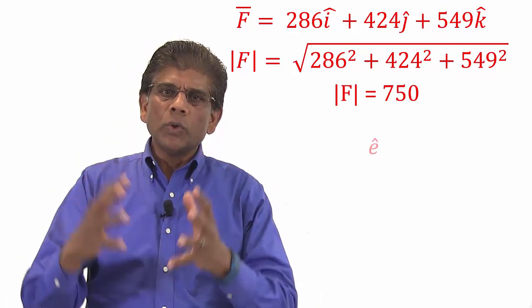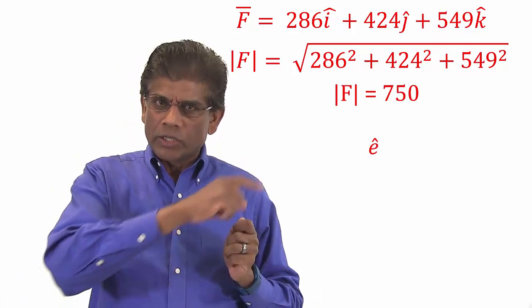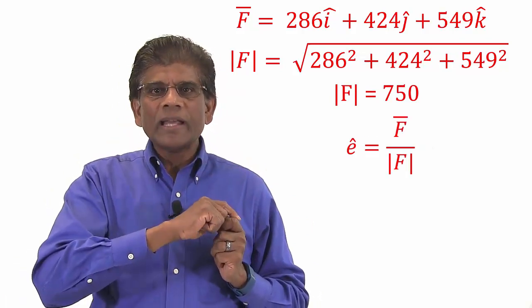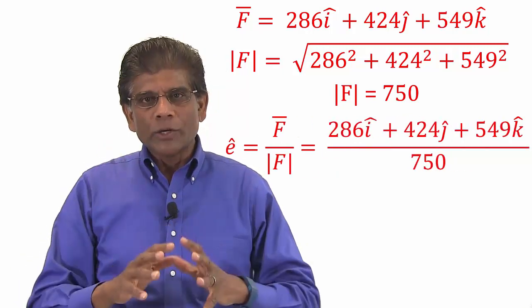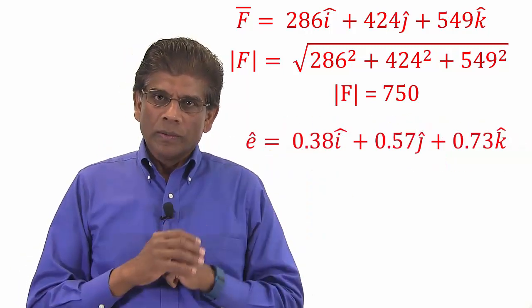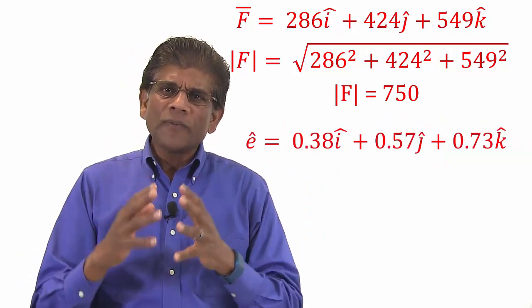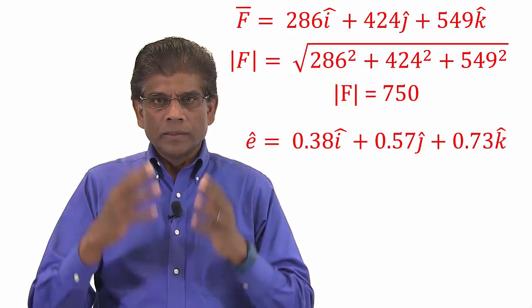So we can find the unit vector which lies along the direction of this force by dividing the vector by its magnitude 750 as shown here. You can verify that magnitude of this unit vector is 1.